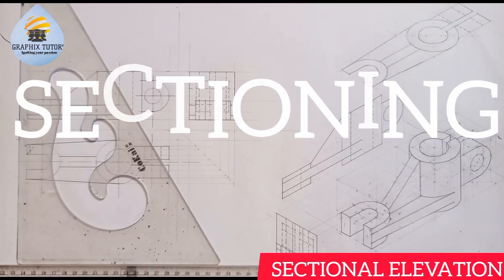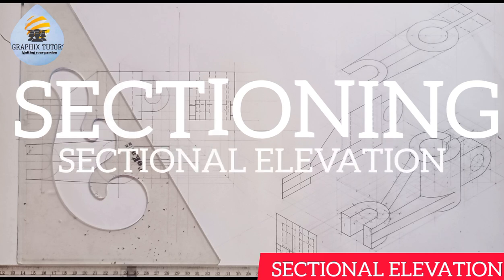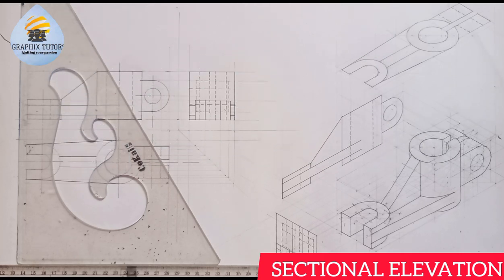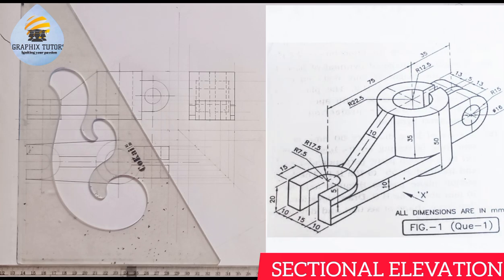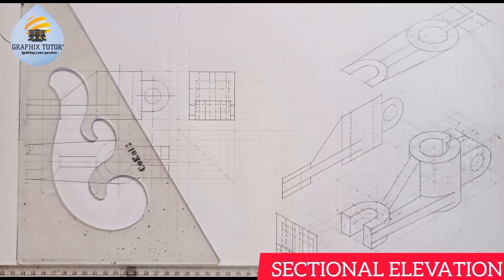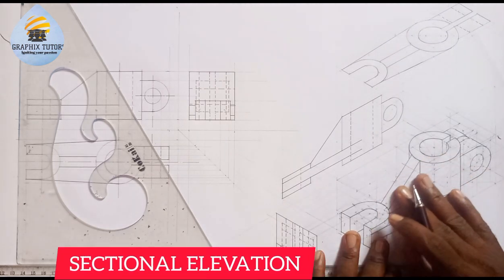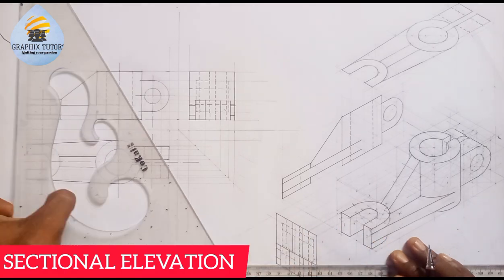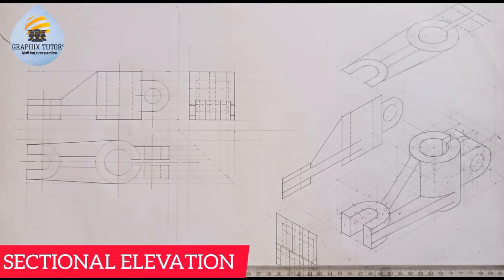Good day everyone, my name is Graphics. If you look at the right-hand side of the screen, you see a given figure, and we have reproduced the given figure on our drawing sheet. Now this is the isometric projection of the given figure, and this is the orthographic projection in first angle of the given figure.